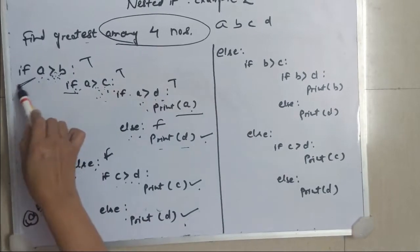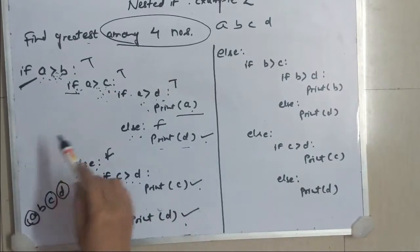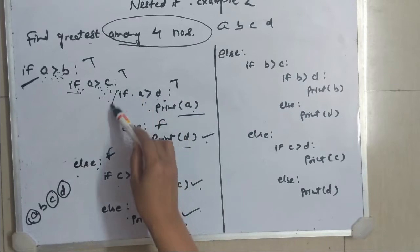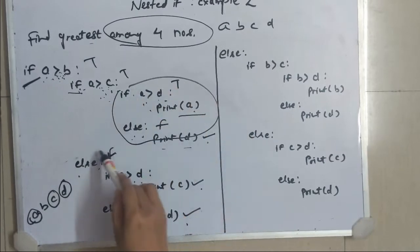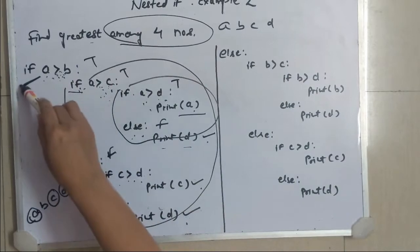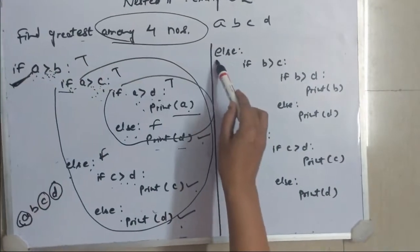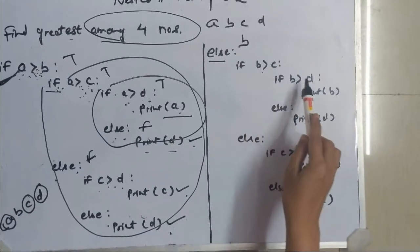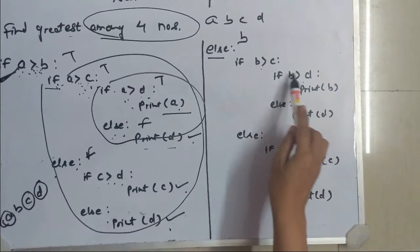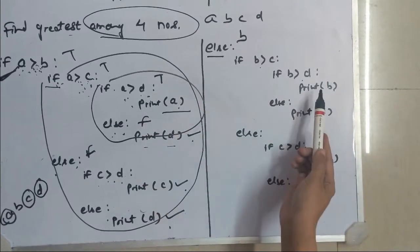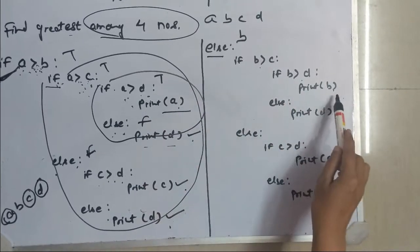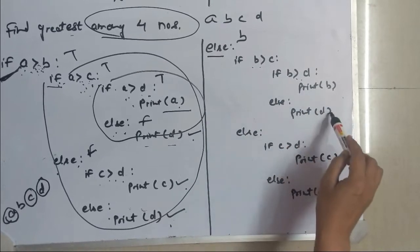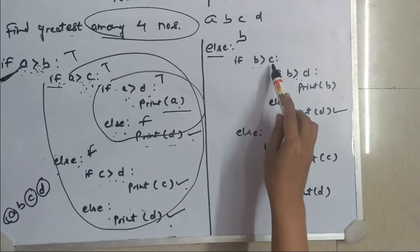Now we will come to the else of this if. This else means that B is greater. Then I will compare B with C and again B with D. If both of them are true, then I am going to print B. And if B is greater than C is true but B is greater than D is not true, then D is greatest. So this if-else is completed.